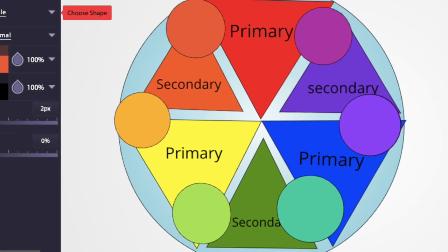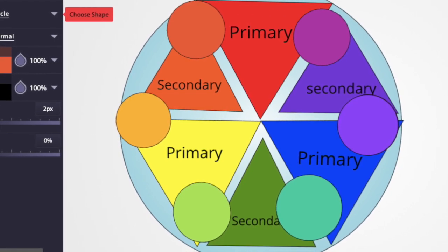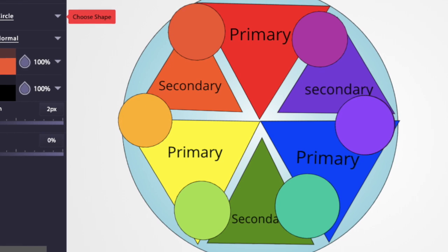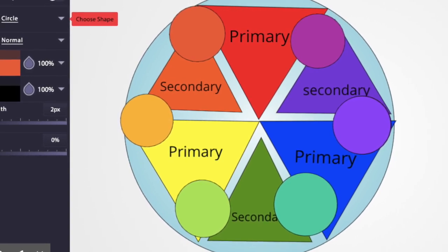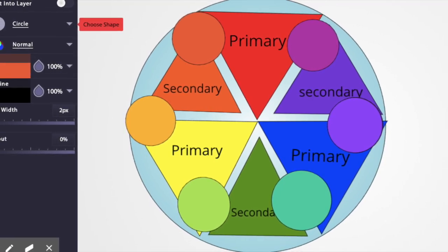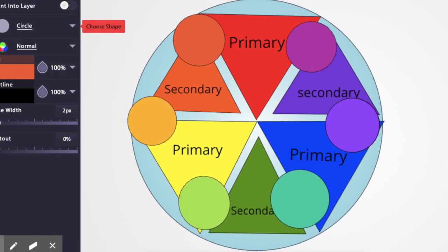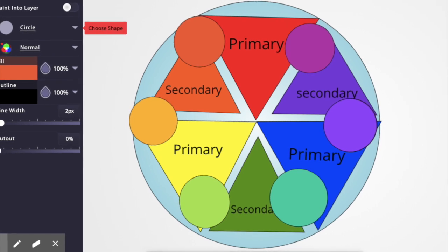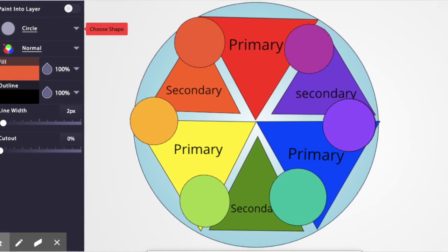So fourth graders, you are going to make a color wheel as well, but you're going to add in not just the primary and secondary colors. You're going to also do the tertiary colors. The tertiary colors are the circles that I put in between the primary and secondary colors, and those are the ones that you need to create.